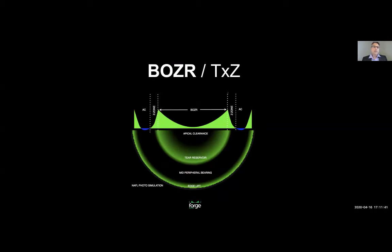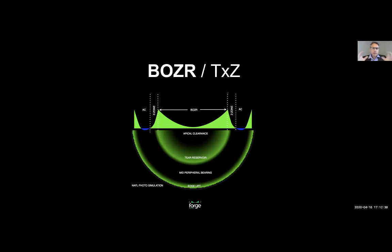Let's look at the basic design elements of the Forge OrthoK lens. The first is the back optic zone radius, or treatment zone. In OrthoK we move away from the term 'back optic zone radius' and use 'treatment zone,' because for GP fitters we've been programmed to change the BOZR to alter alignment — but this is not the case with OrthoK lenses. The treatment zone controls the amount of myopia you want to correct, not the lens alignment.